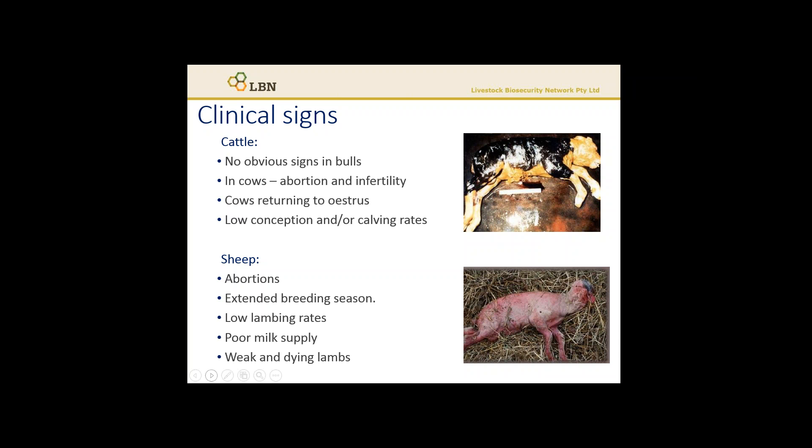A flock can also become infected through the introduction of carrier animals — animals where the bacteria are persisting in the intestines and being shed in the faeces. This also potentiates the contamination of both the pasture and the water supplies.